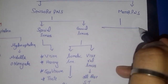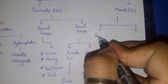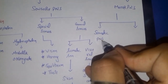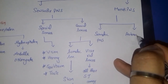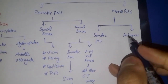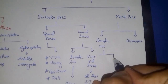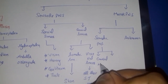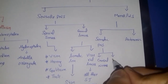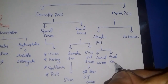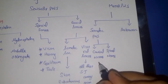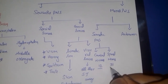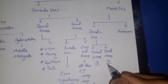Motor PNS can be divided into two parts: the somatic and the autonomic. Somatic involves nerves known as the cranial nerves and the spinal nerves. There are 12 pairs of cranial nerves and 31 pairs of spinal nerves, which we will study in different videos.